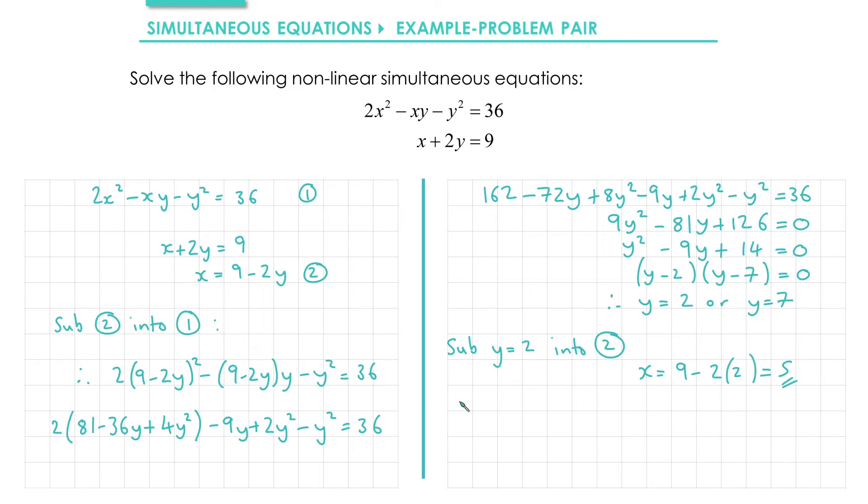Then we'll substitute the other value in, so we'll sub y = 7, into equation 2. That gives us x = 9 - 2 times 7, which is negative 5.